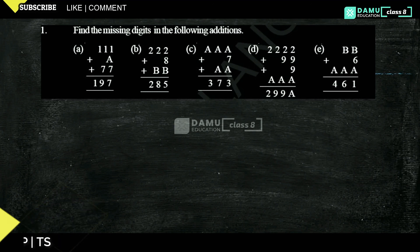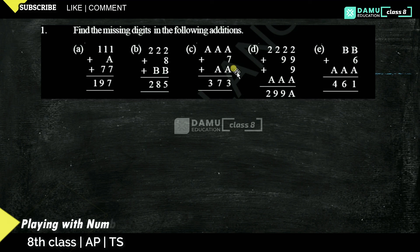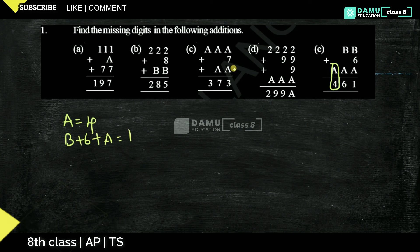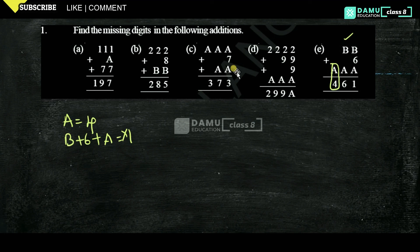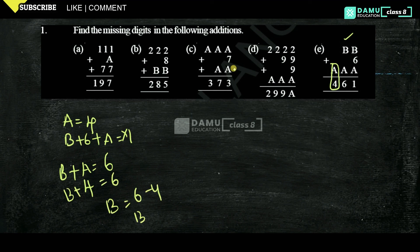Problem E: BB plus 6 plus AAA equals 461. From the ones column, A equals 4. Then B plus A equals 6, so B equals 6 minus 4, meaning B equals 2. But since we need single digits, 2 is split: B plus A in tens column with carry means B equals 1 in the ones place of BB.